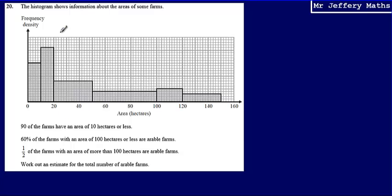This is question 20. The histogram shows information about the areas of some farms. We're told that 90 of the farms have an area of 10 hectares or less, that 60% of the farms with an area of 100 hectares or less are arable farms, and half of the farms with an area of more than 100 hectares are arable farms. We need to work out an estimate for the total number of arable farms.